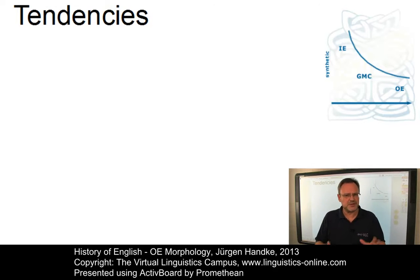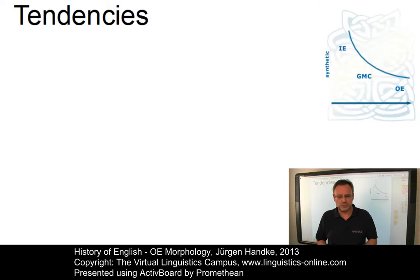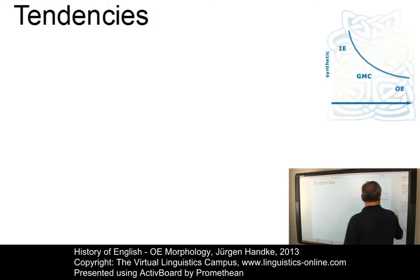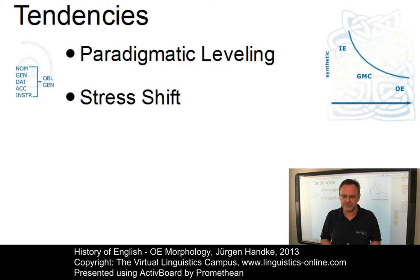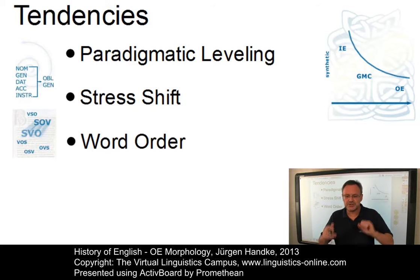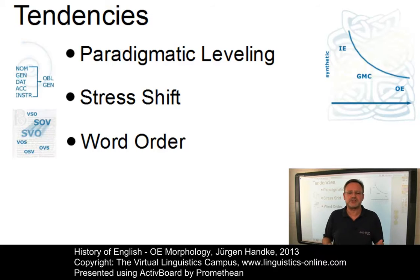the Old English system seems relatively meagre. Furthermore, the Old English system already exhibited a number of inherent tendencies that would contribute to its weakening. The most well-known of these are the minimization of paradigms through paradigmatic leveling and the shifting of the primary stress to root syllables. As a result, Old English had already developed a relatively fixed word order.